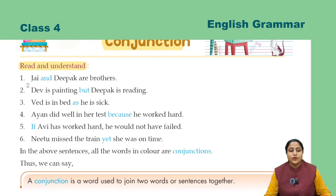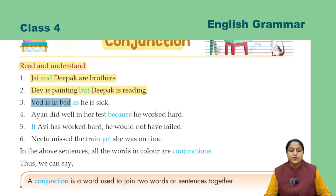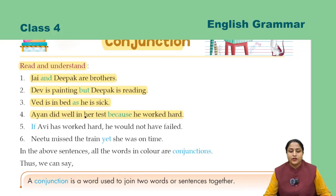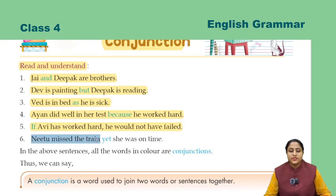Pardate hain aur samajte hain. First, Jay and Deepak are brothers. Second, Dev is painting but Deepak is reading. Third, Ved is in bed as he is sick. Fourth, Ayan did well in her test because he worked hard. Fifth, if Avi has worked hard, he would not have failed. Sixth, Neetu missed the train yet she was on time.